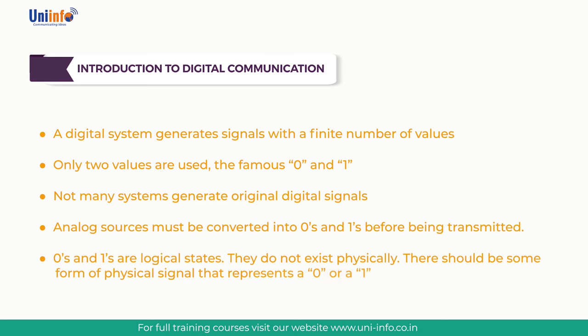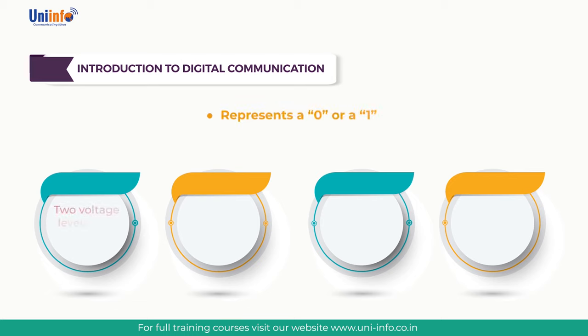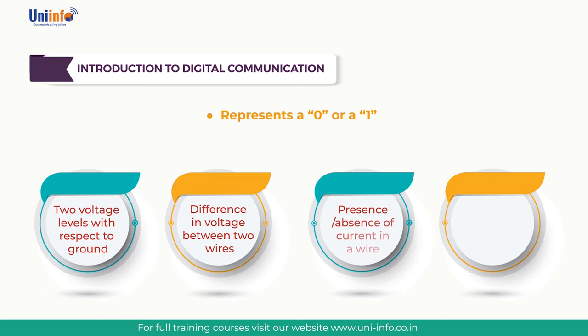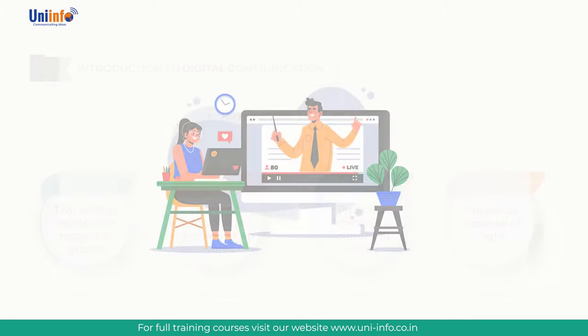Zeros and ones do not exist physically, so there must be some physical signal that represents them. These can be: two voltage levels with respect to ground; the difference in voltage between two wires; the presence or absence of current in an antenna wire; or the presence or absence of light. This procedure is known as encoding. This concludes the chapter on digital communication.